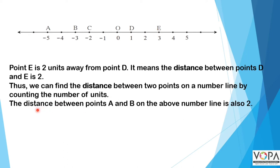Similarly, the distance between points A and B is also two units. The distance between B and D can be counted as one, two, three, four — so the distance between B and D is four units.